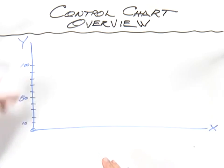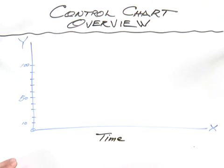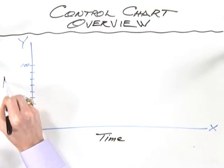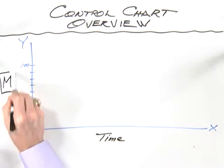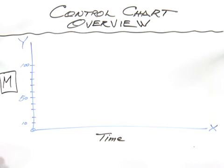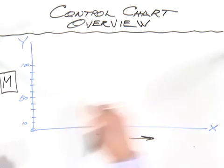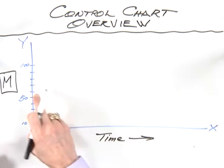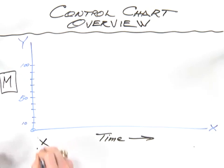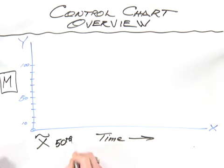You remember the run chart — we had an X and a Y axis. Time is always shown on the horizontal axis and the measure of improvement or metric is shown on the vertical or Y axis. You can have patients, months, days, times, Monday, Tuesday, Wednesday, all along the horizontal axis whether you're doing a run chart or a control chart. The run chart was a plot of the data over time and we put the median — X with a tilde above it — which gives us a center point, also known as the 50th percentile.